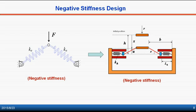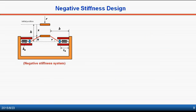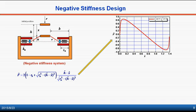From this figure, we can obtain the relationship between the vertical applied force and the displacement. In this region, the slope of the curve is negative. Therefore, the stiffness in this region is also negative.